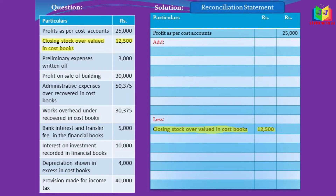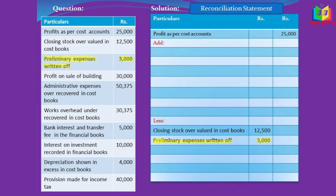The next item is closing stock overvalued in cost book. Closing stock is income, and this income is overvalued in cost book, so the profit will increase. In order to rectify that, we have to subtract this closing stock, so I write it in the less column.